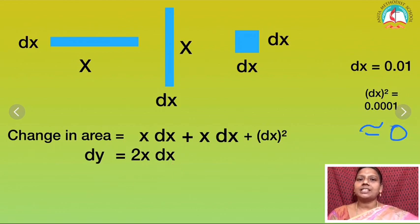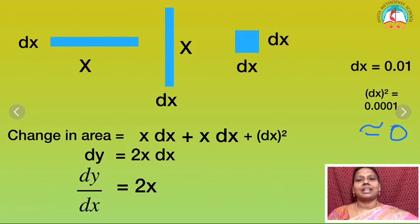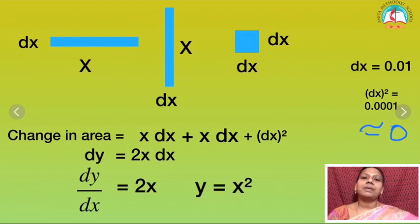So shall I bring that dx down? Then dy by dx is equal to 2x. Therefore if I have y is equal to x square, then my differentiation dy by dx is 2x.